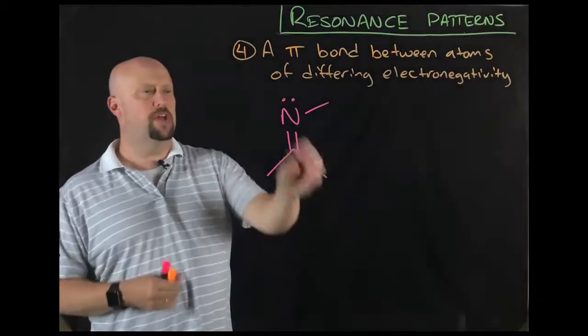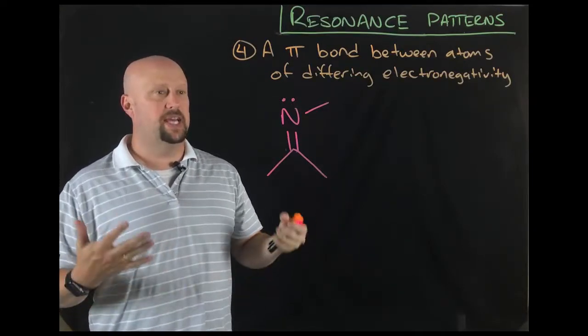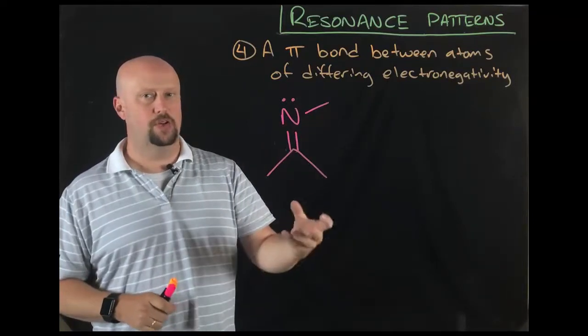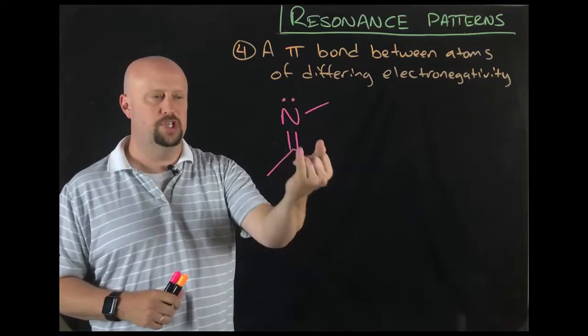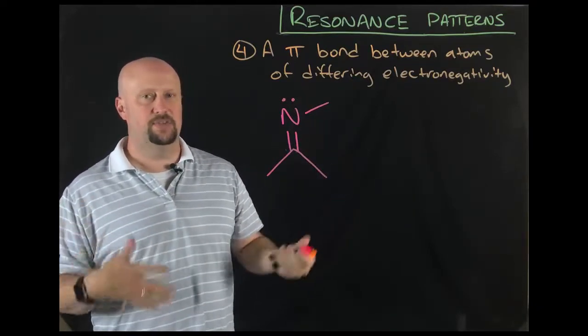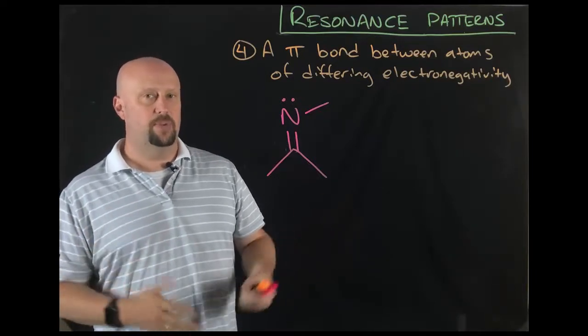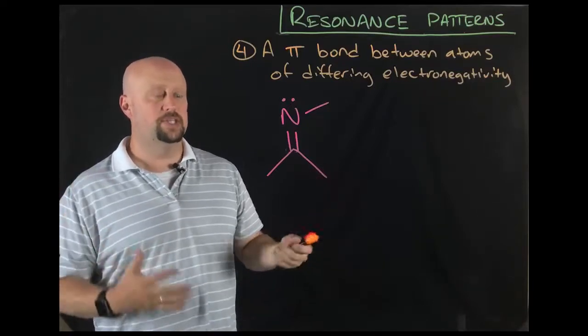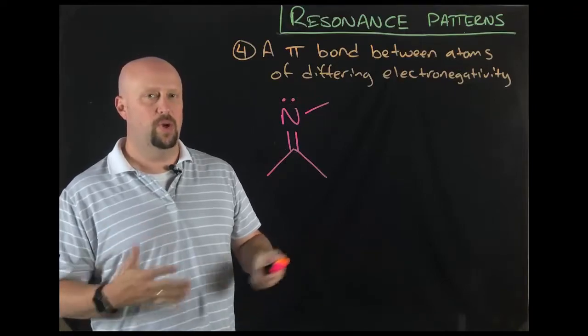So pattern number four, we've got a pi bond between two atoms that have different electronegativities. Now, that case is going to come up a lot. When we talked about functional groups, we've talked about a whole lot about functional groups that were carbonyl groups where you had an oxygen double bonded to a carbon. That situation sort of inherently lends itself to some resonance scenarios. Now, it doesn't mean that every time you see a carbonyl group that you're going to have to draw a resonance structure. It means that you need to recognize that there's a possibility that you might have to show some resonance.